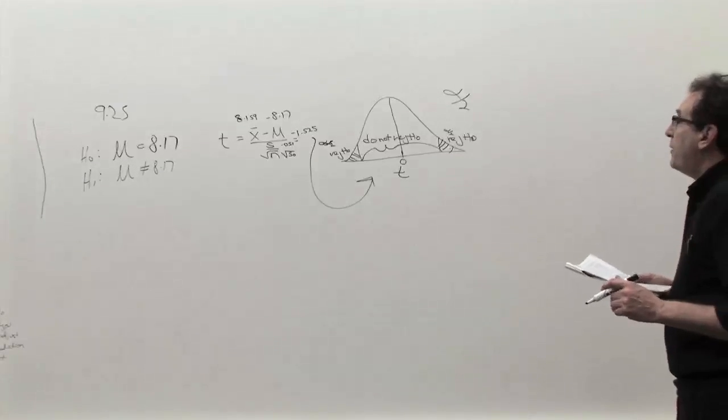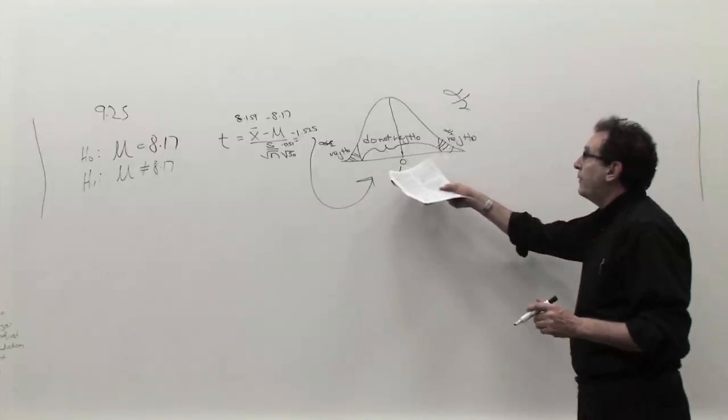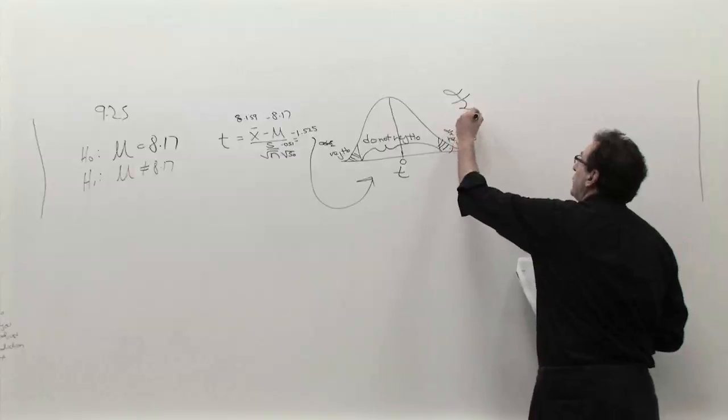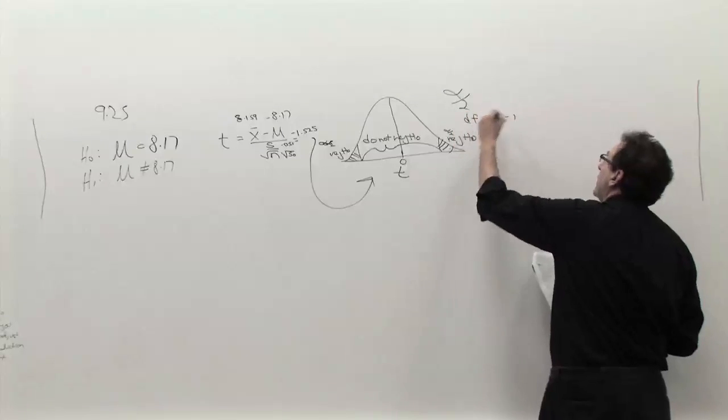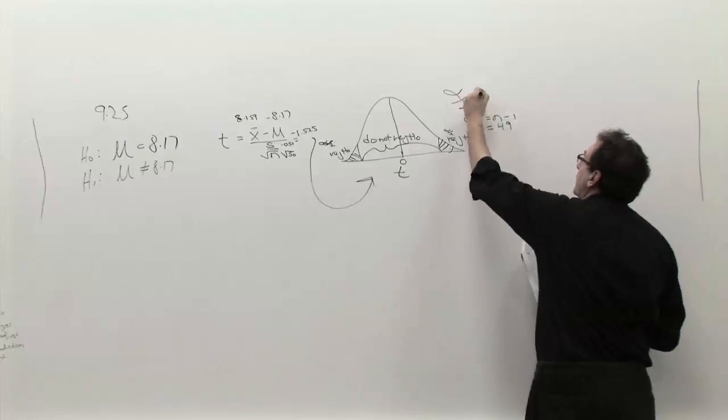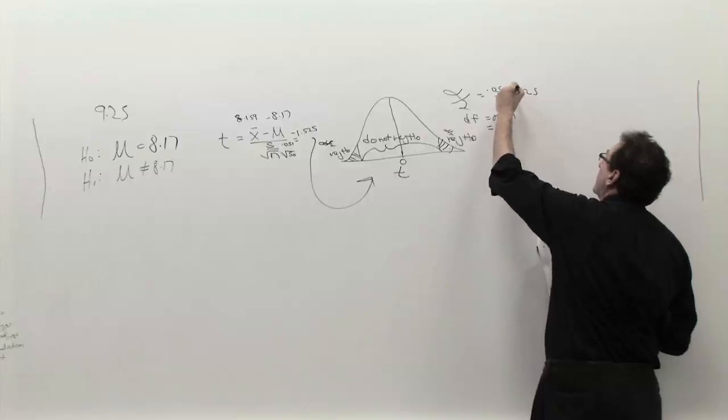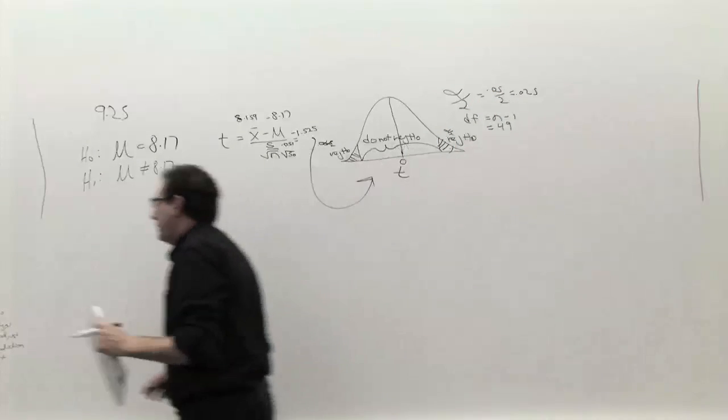So step number three to fill out this diagram that we just have the outline because the outline applies to every example. We need degrees of freedom, which is n minus 1, which is 49 in this case. And the alpha is 0.05, which is pretty traditional, which is 0.025 goes here, 0.025 goes here. I should be able to fill that in.